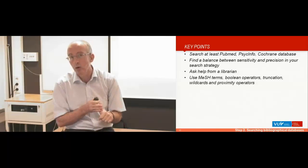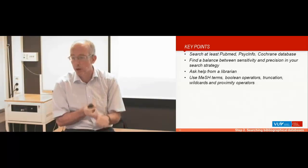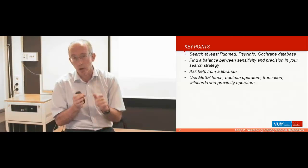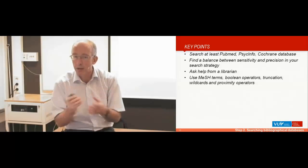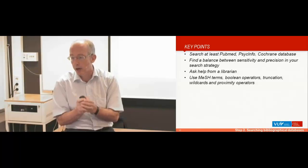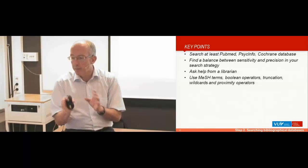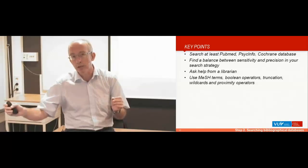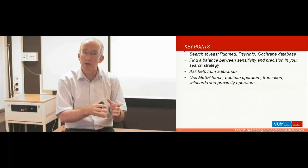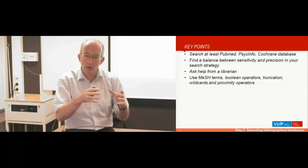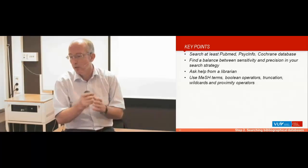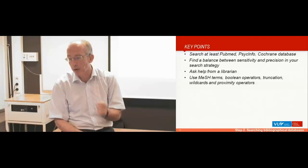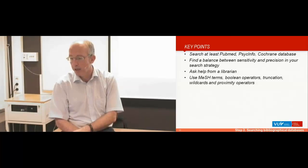The key point of this part of the course is that if you do a meta-analysis and search bibliographical databases, you must search at least PubMed, PsycInfo, and the Cochrane databases — but also think about other databases and other methods to identify the right trials. There is always a balance between sensitivity and precision in your search strategy: if you want to be absolutely certain you don't miss any trials, you have to do a lot of work; a narrower search means less work but a higher chance of missing studies. If you can, ask a librarian for help, and make use of Boolean operators, truncation, wildcards, and proximity operators.